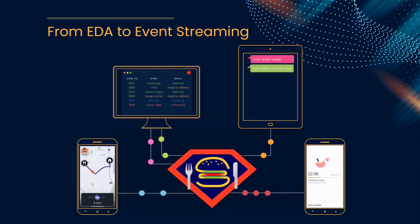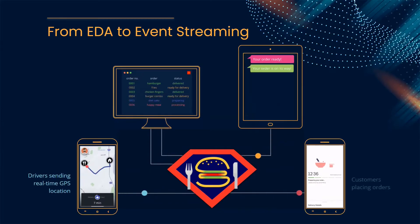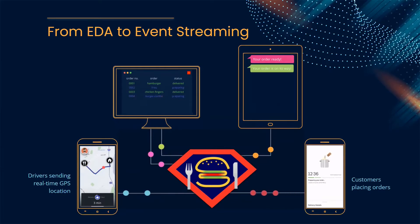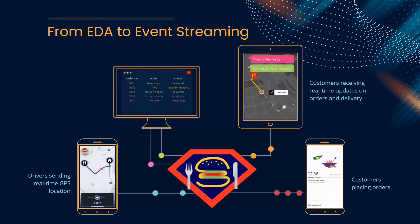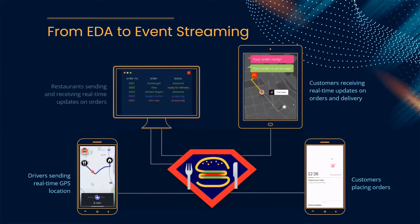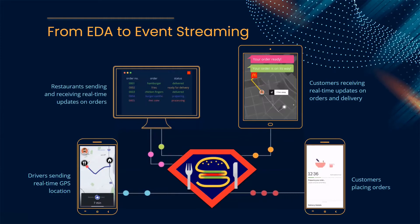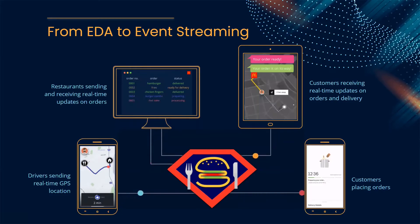Producers in our case are the drivers sending real-time GPS updates on their location and customers placing orders. There are also peak hours where more orders come in. As for consumers we talked about in EDAs, hungry customers want updates on their meal — has someone started cooking their burger, and how long until delivery? Restaurants can be classified as both a consumer and a producer: they receive real-time updates on incoming orders as well as produce real-time updates on the statuses of those orders. So with so much data flowing in, how can a business make sure they're handling this volume efficiently?